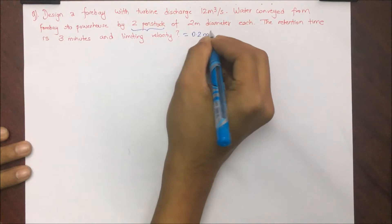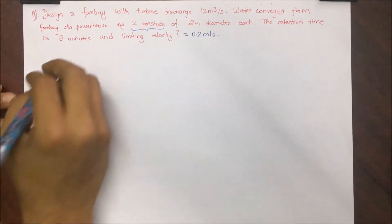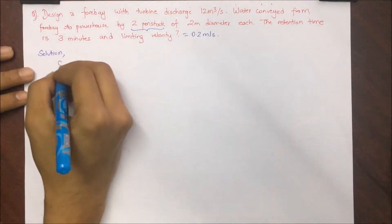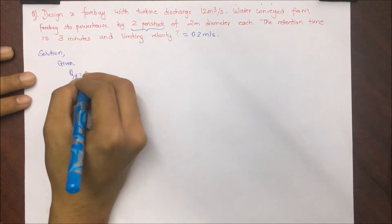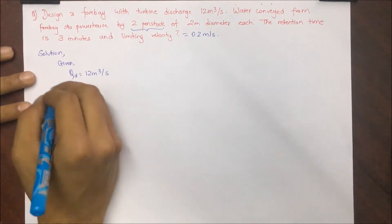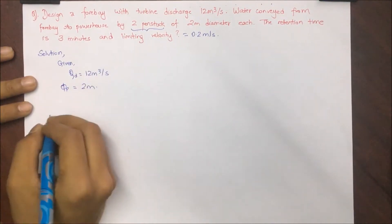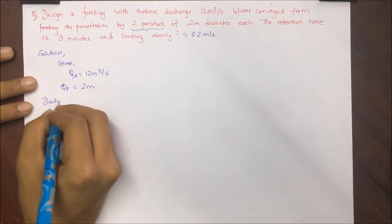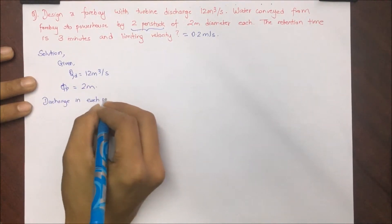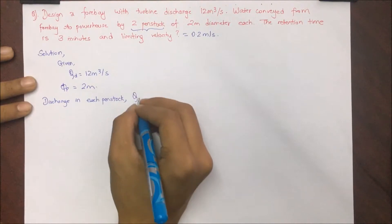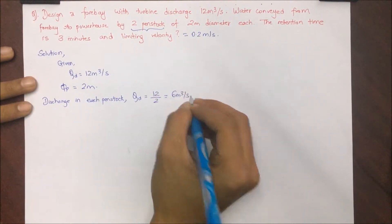Solution: starting with the given data. Q discharge, that is design discharge 12 meter cube per second. Diameter of penstock 2 meters.